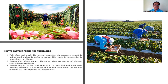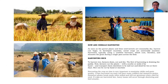Pick often and small. The biggest harvesting mistake gardeners make is waiting until produce is too big or too old. This results in produce that is tough, bitter, or diseased — like lettuce: don't go past 21 days or it turns bitter. Harvest when plants are dry, as harvesting when wet can spread diseases, especially on green beans. Harvest early in the day — produce tends to be better hydrated in the early morning. Once harvested, eat within the next day or two to preserve freshness.